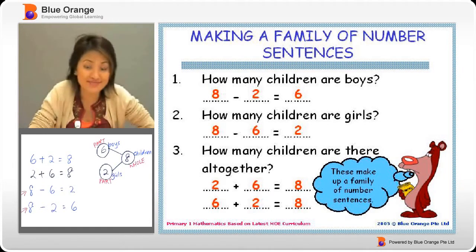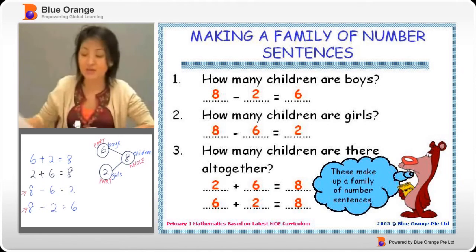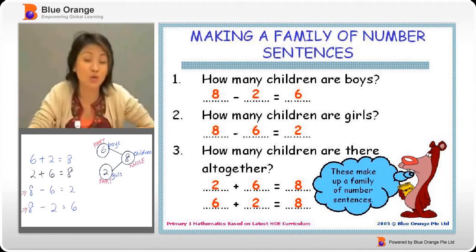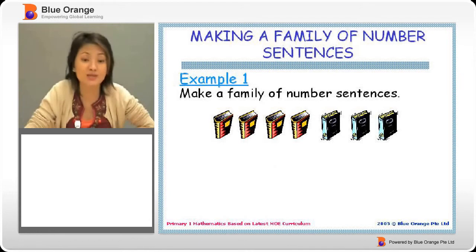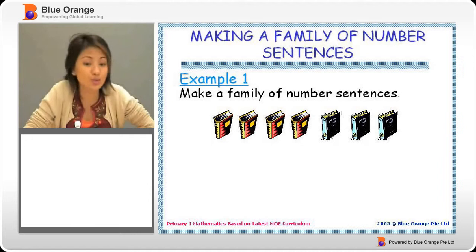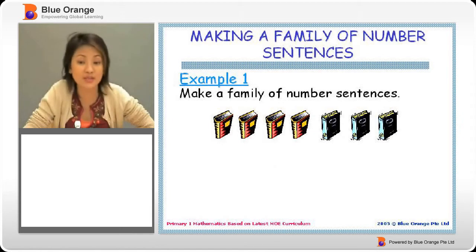Are you clear? Well, it's okay if you're not clear for now, because we're going to go through a few examples and practices. Let's look at the first example. Make a family of number sentences. Now we can see two types of books, or two groups of books. The one that is yellow in color, yellow and red, and the other one is blue.